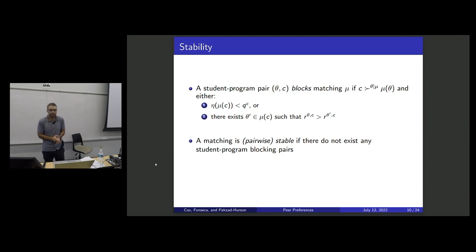Our notion of stability is largely unchanged with the distinction that we're going to have this theta given mu here. So a student and a program pair are going to block a matching if the student, given the matching that's actually constructed, prefers to go to another program. And that program is willing to take them. What do I mean by that? I mean, either the program has excess seats or doesn't have excess seats, but it's admitted a student who has a lower score.